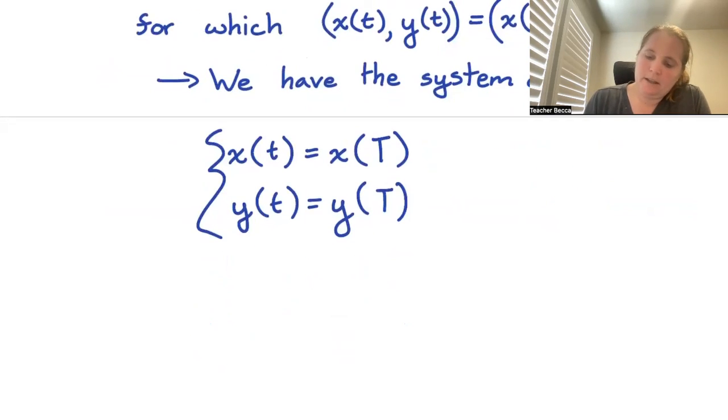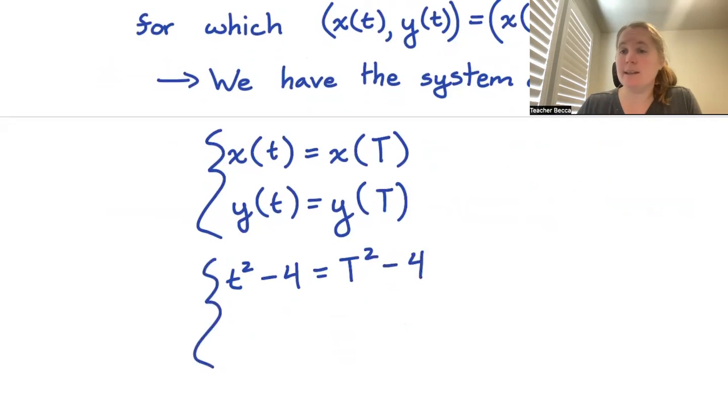Our x(t) was just t² - 4, so we have t² - 4 equals T² - 4. y(t) was just sin(t), so we have sin(t) equals sin(T).